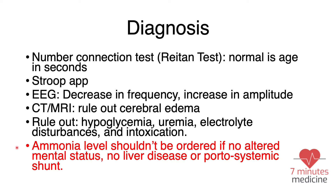Ammonia levels should only be ordered when you suspect the patient has liver disease or a portosystemic shunt plus altered mental status. You do not order ammonia at baseline.